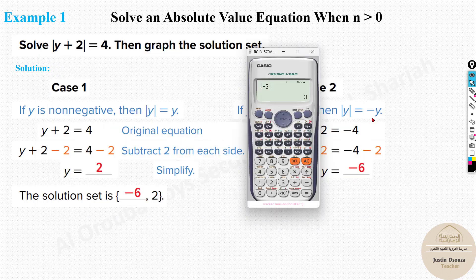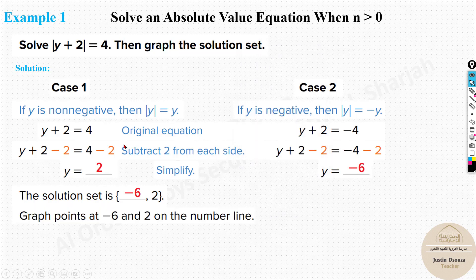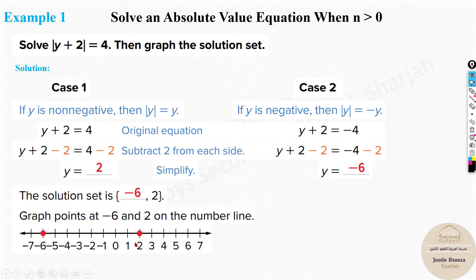If you try this in the calculator using shift, absolute value, alpha X plus 2 equals 4, then shift and solve, you'll only get the single answer 2. Negative 6 won't appear. So you get a partially correct answer but not the full correct answer — that's why the manual method is important. To graph the solution set, draw a number line and mark positive 2 and negative 6.